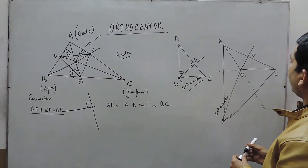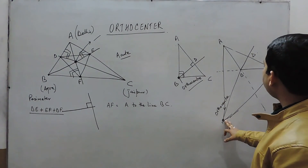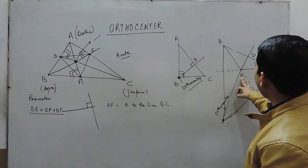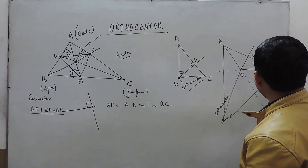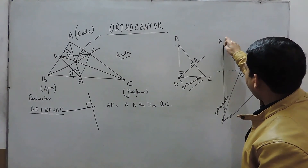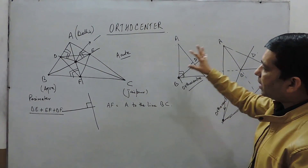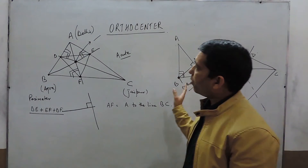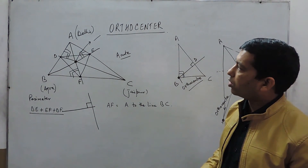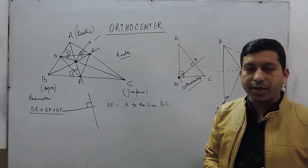Here is one very important thing: if O is the orthocenter of triangle ABC, then B is the orthocenter of triangle OAC. Similarly, C is the orthocenter of triangle OAB and A is the orthocenter of triangle OBC. This is the complete information about the orthocenter. In the next class, we will talk about the incenter and the circumcenter. Thank you.